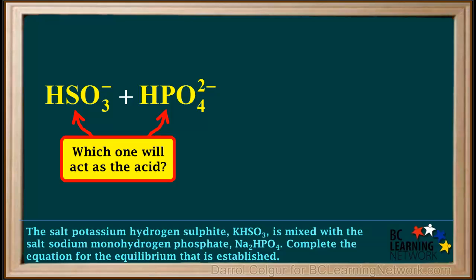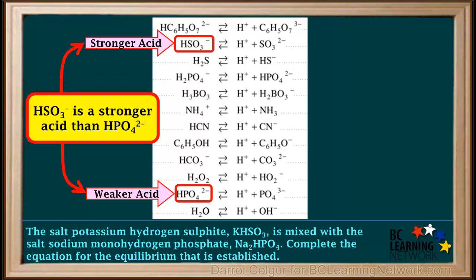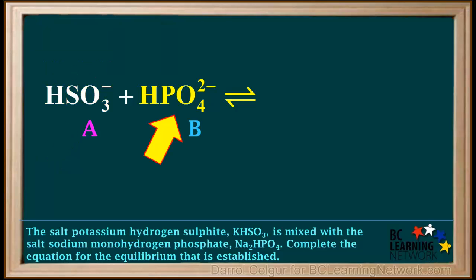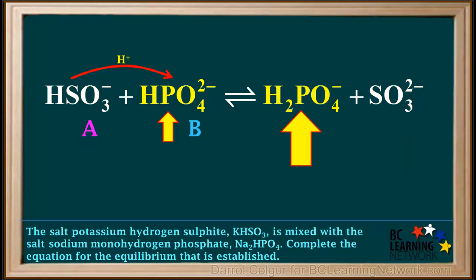Because these are both amphiprotic, we now have to determine which one will play the role of the acid. To do this, we compare their strengths on the acid table. We see that HSO₃⁻ is above HPO₄²⁻ on the left side of the table, so HSO₃⁻ is a stronger acid. Therefore, HSO₃⁻ will act as the acid and HPO₄²⁻ will act as the base. The acid donates a proton to the base: when HSO₃⁻ loses a proton it forms SO₃²⁻, the sulfite ion, and when HPO₄²⁻ gains a proton it forms H₂PO₄⁻, the dihydrogen phosphate ion.